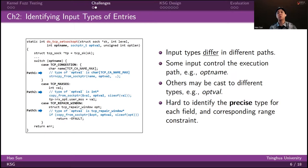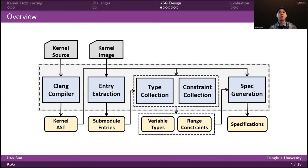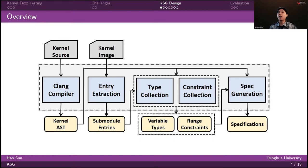To address these two challenges, we propose KSG, the Kernel Specification Generator. This figure shows the overall workflow of our method. First, the kernel source code is compiled into a bootable image, and the AST information is dumped locally with the help of the Clang compiler. We then utilize a probe-based tracing method to collect the submodule entries. After that, we collect input types and value constraints for each entry in different execution paths with Clang Static Analyzer. And finally, we generate specifications with all gathered type information and entries in the domain language used by the kernel fuzzer.